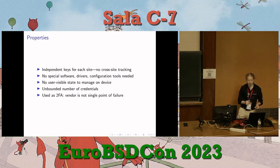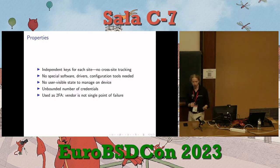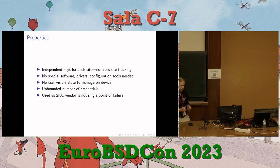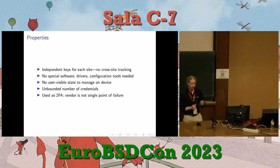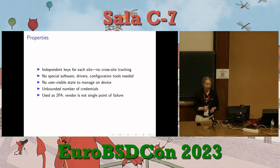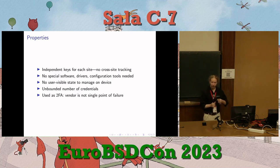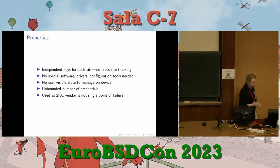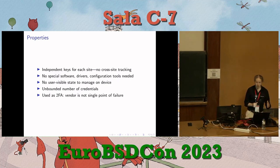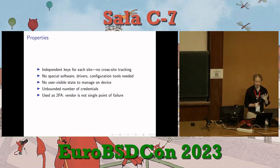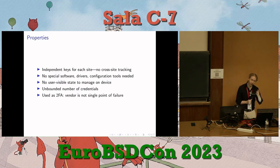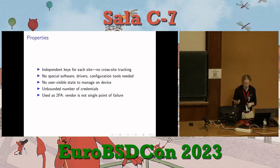With traditional hardware crypto tokens, there's always a chance the vendor has been compromised or deliberately put in a back door to derive all the private keys — think NSA. That is a concern with FIDO keys too, but when you use them as a second factor, a back door into, say, Yubico is not as attractive a target because the FIDO key alone isn't enough to break in anywhere. You'd need both the back door and to phish the user's password. This mitigates the supply chain attack angle and eliminates the vendor as a single point of failure.